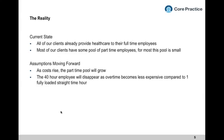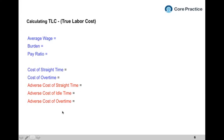As costs continue to rise, the part-time pool will grow. The 40-hour employee is going to be so expensive because as benefit costs go up, there's more burden on the total cost of having a full-time employee. We'll want to work full-timers 50 hours rather than hire an additional employee, because fixed costs are already covered. This could be the death of the 40-hour employee over the next five years, and I want to prove that through a very simple calculation.